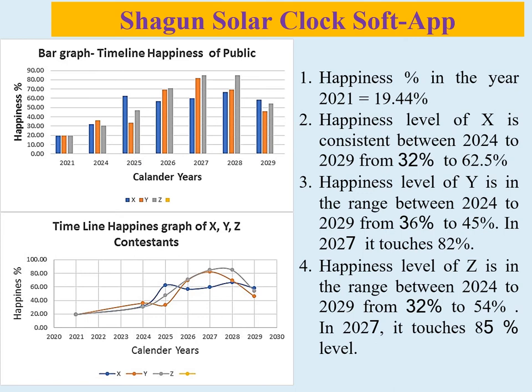Mr. X के case में जनता का penis level 2024 में 32% से आरंभ होकर, प्रधान मंत्री term 2024 से 2029 में 62.5% से 58.33% के बीच consistent रहता है। Mr. Y के case में penis level 2024 में 36.11% से आरंभ होकर, प्रधान मंत्री term 2024 से 2029 में क्रमशः घटता बढ़ता है, 2027 में 82% level छूता है और 2029 में 45% हो जाता है।